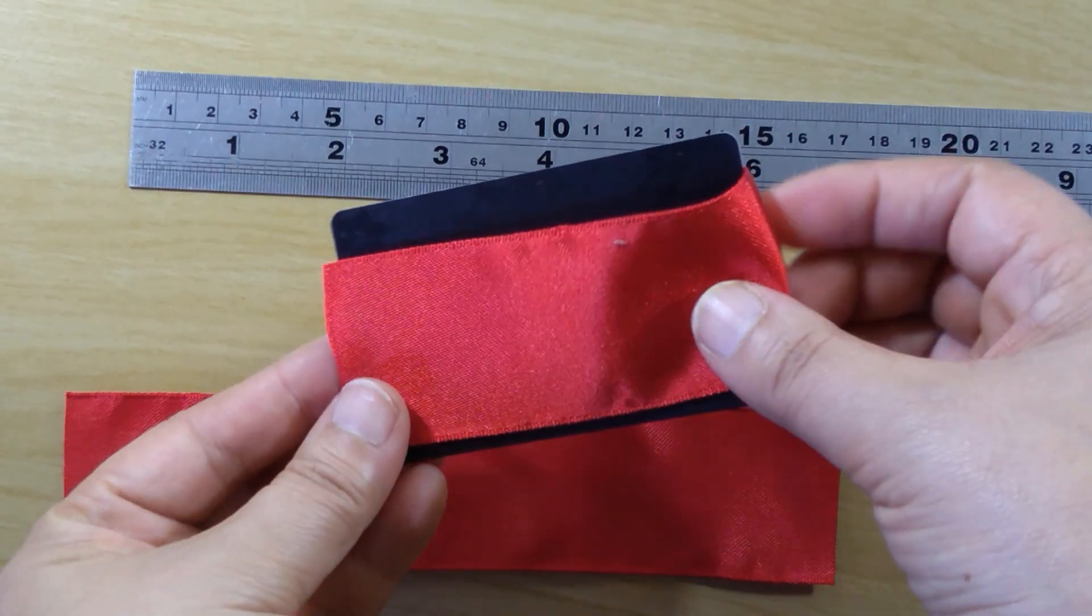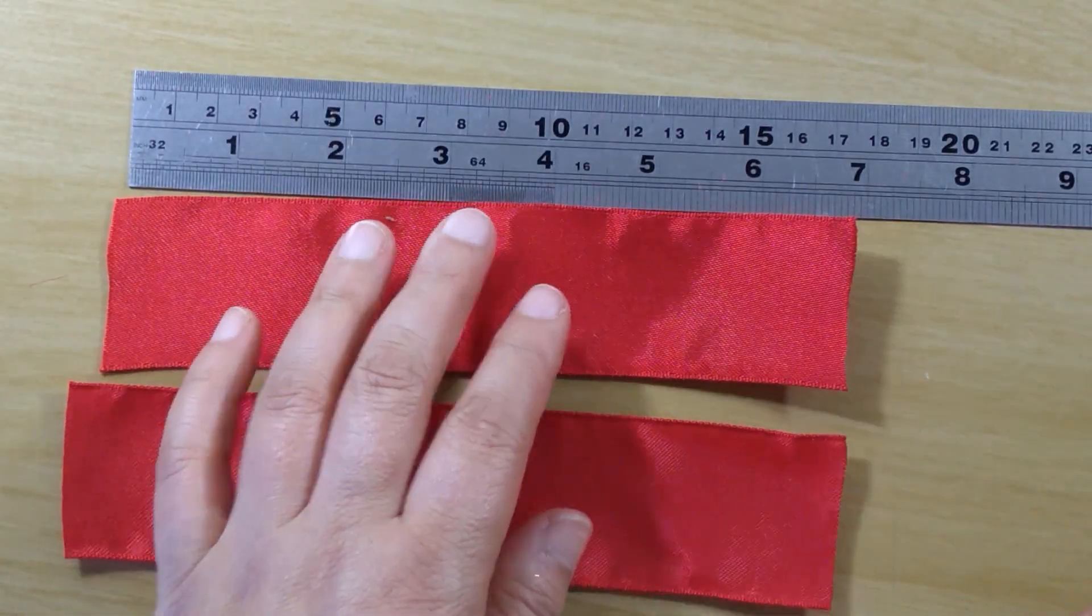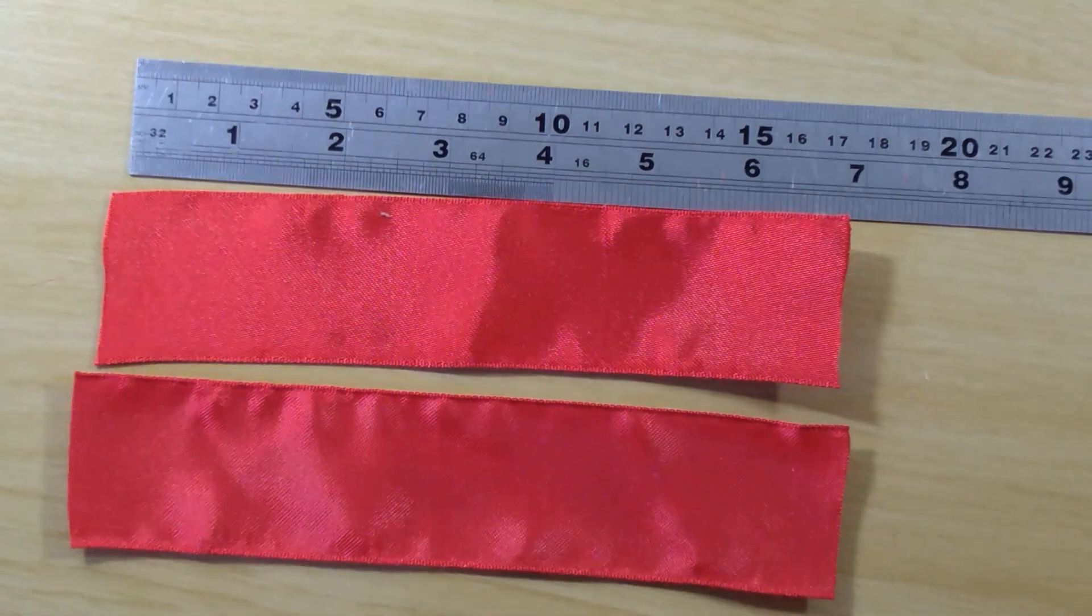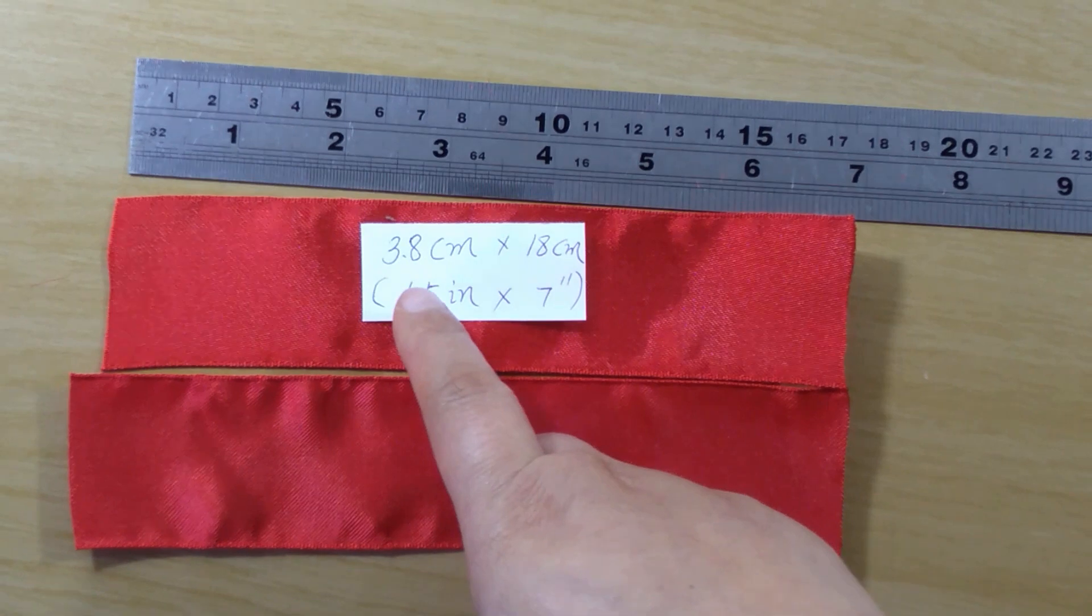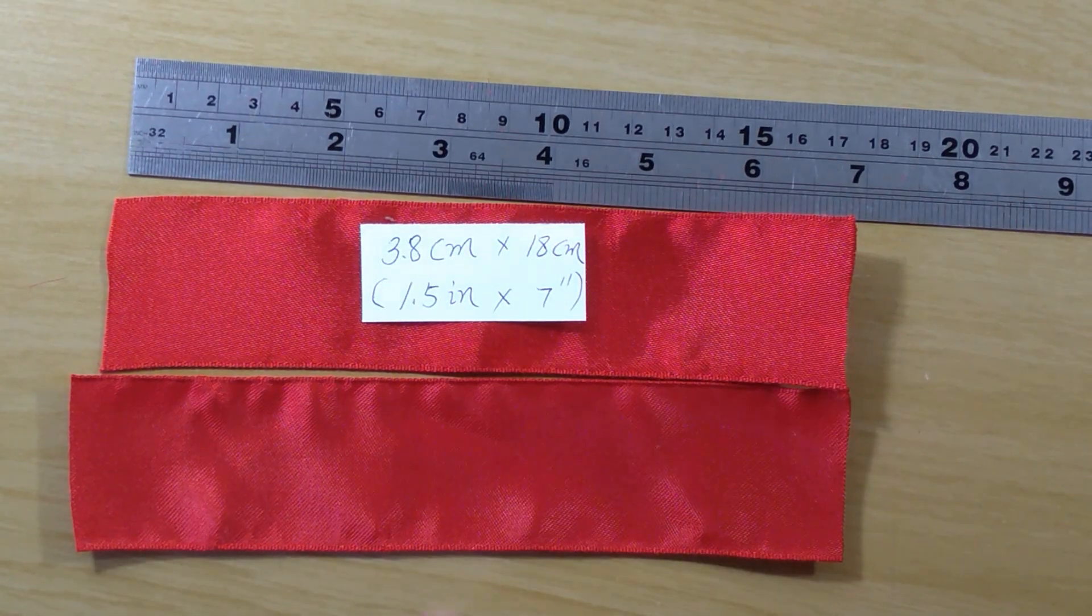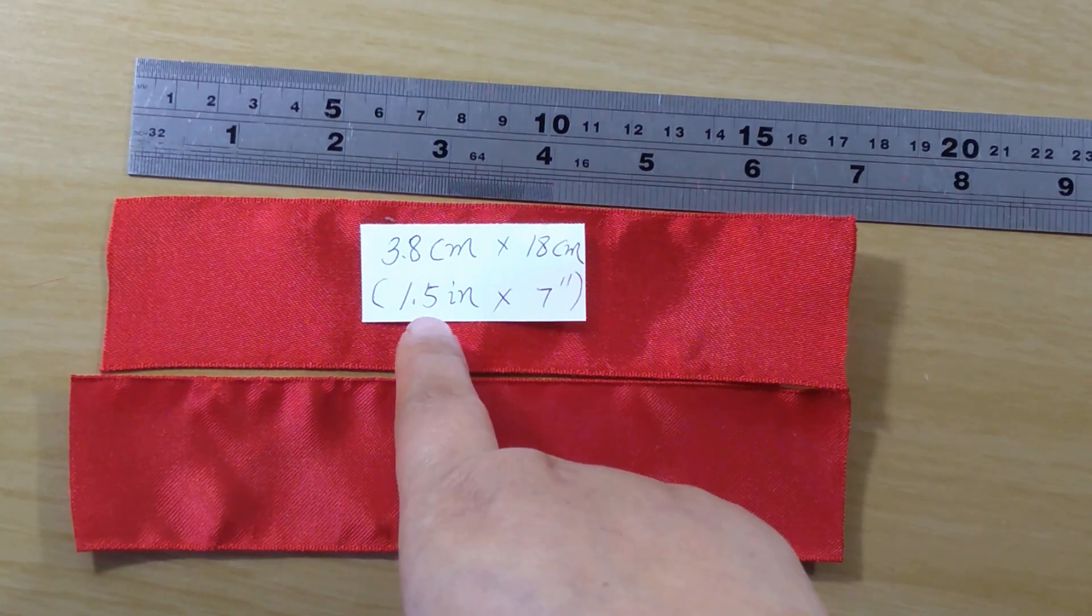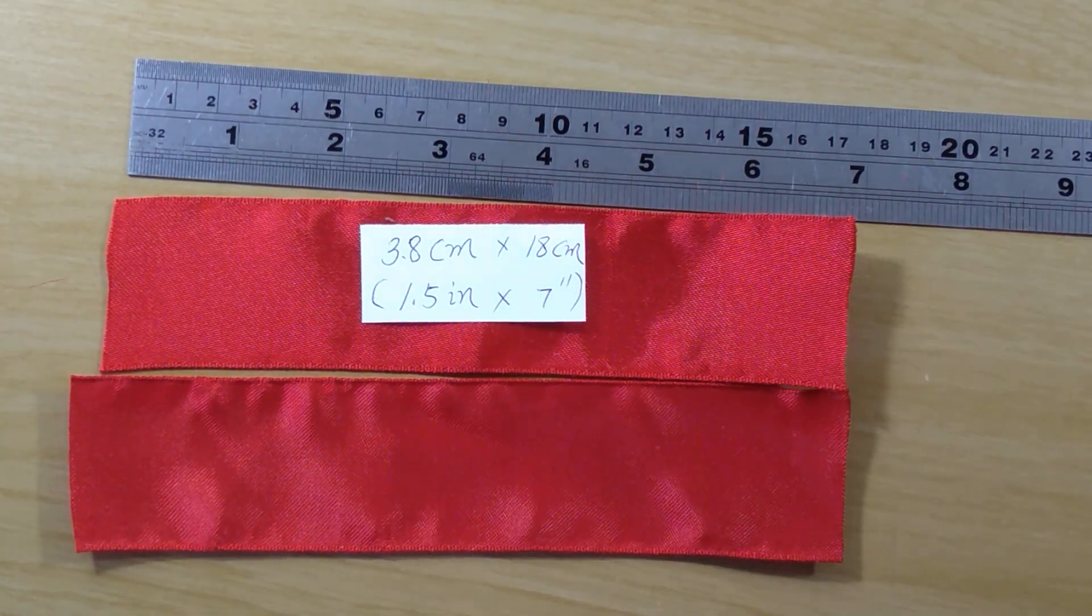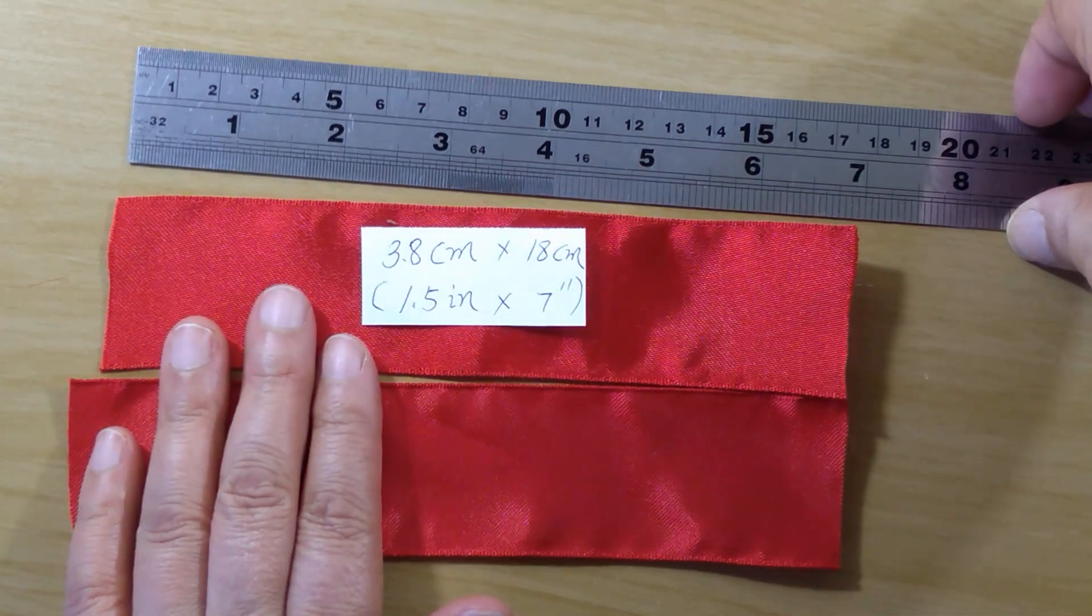That's the material you need to prepare. You prepare two pieces of the ribbon. I'll put it down here: 3.8 centimeter, 18 centimeter long, 1.5 inches by 7 inches. That's the size we need. Let's start it.